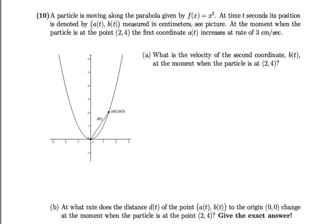So let's put that information. At (2,4), the rate of a, which is the derivative a'(t), is equal to 3 centimeters per second. And we are interested in finding the velocity of the second coordinate b(t) at that same moment, which is at (2,4). Find b'(t), the rate of b, at (2,4).